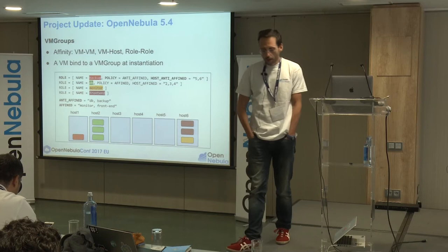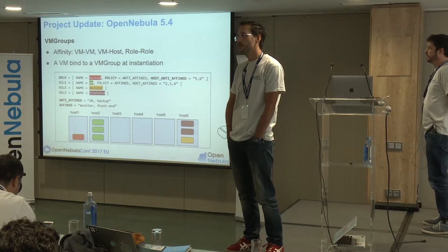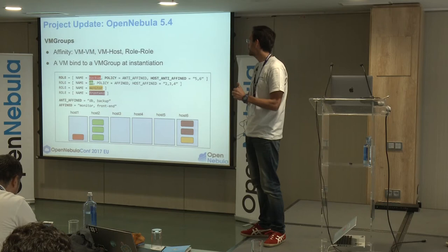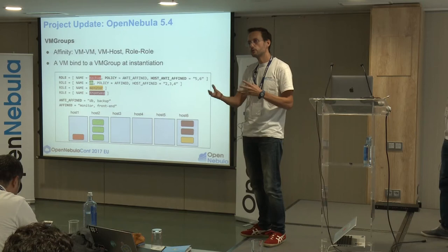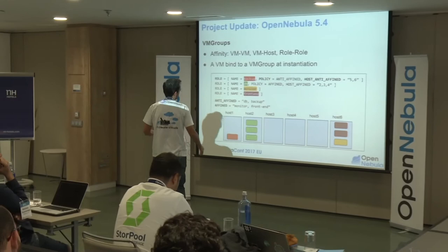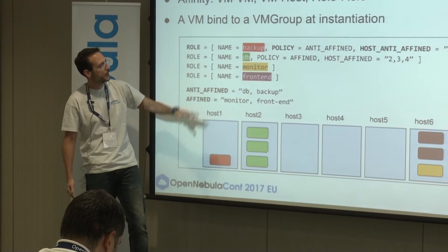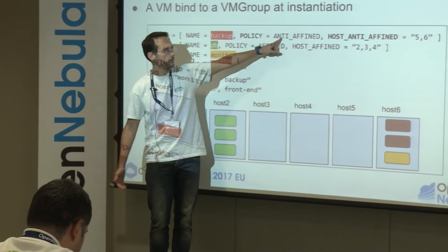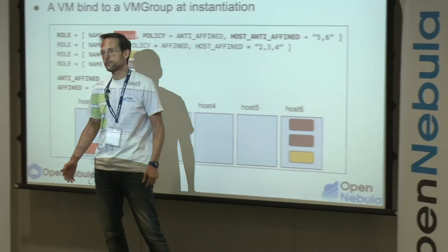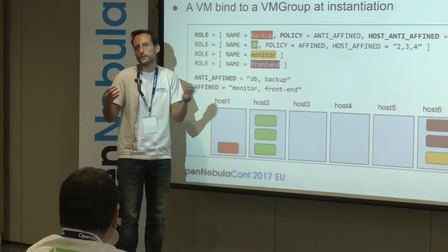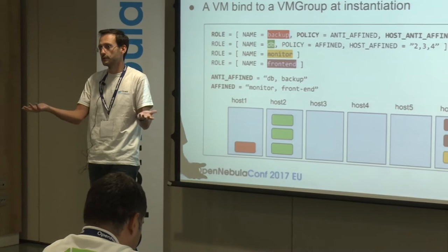Another feature we received a lot of requests for was the need to easily specify the affinity or anti-affinity of VMs. We developed the concept of VM groups. A VM group expresses which VMs are related and how you want to deploy those VMs. For example, you have a multi-tiered service with different VMs. You define roles like backup role, DB role, monitoring, and content. You can specify things like: I want all the VMs in the backup role not to be in the same hypervisor and not to be deployed in hosts 5 or 6.